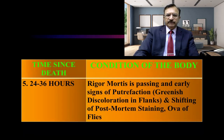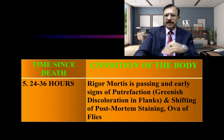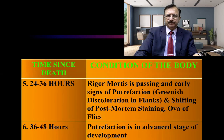In 24 to 36 hours, the rigor mortis is passing. Early signs of putrefaction appear — that is, greenish discoloration in the flanks starts appearing. Because of the pressure, shifting of hypostasis or the post-mortem staining is seen. At this stage, putrefactive gases are being emitted, and flies are attracted and laying eggs on the body.